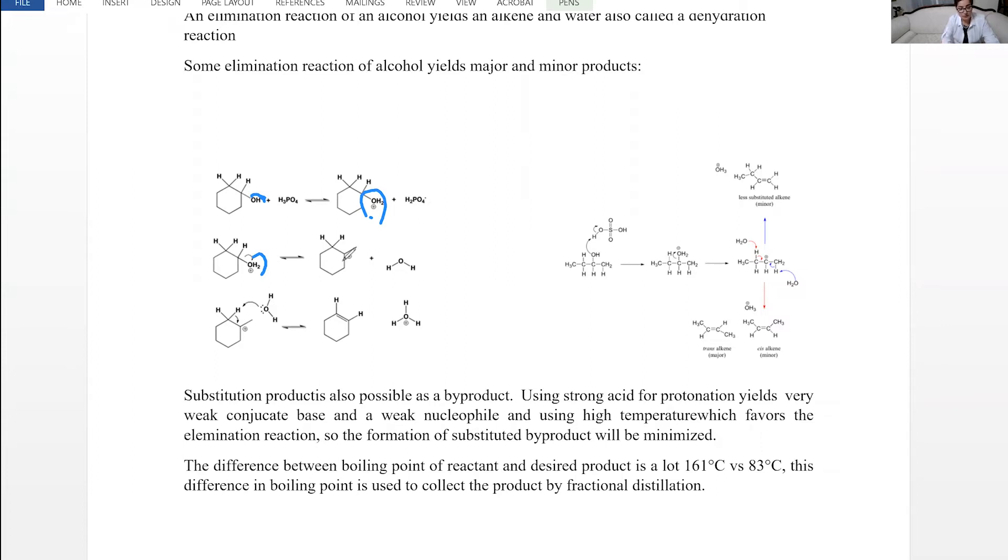Now we have the carbocation. In order for elimination to be complete, a hydrogen needs to be removed. If the carbocation that is formed is symmetrical, like in this example or for cyclohexanol, it doesn't matter if the hydrogen is removed from the carbon adjacent on clockwise or counterclockwise. We still get cyclohexene regardless of the position because of symmetry.